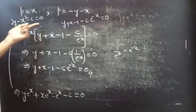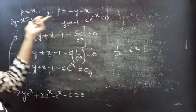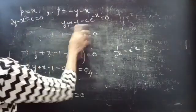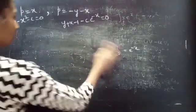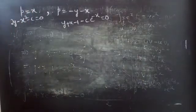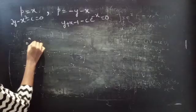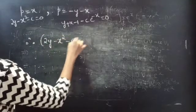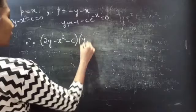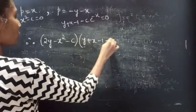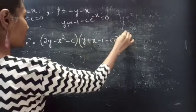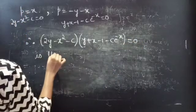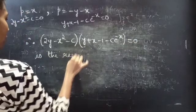The combined form of these two solutions is the solution for the given differential equation. Therefore: (2y − X² − c)(y + X − 1 − c·e^(−X)) = 0 is the required solution.